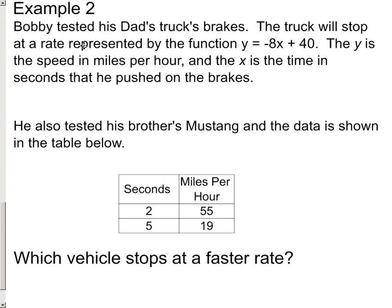So let's read this. Bobby tested his dad's truck's brakes. The truck will stop at a rate represented by the function y equals negative 8x plus 40. And that seems like an odd equation. So then the problem goes on, and it talks a little bit more. The y is the speed of miles per hour. So this is how fast that truck would be going. And the x is the time in seconds that he steps on the brakes. So if he does not step on the brakes, that would be zero seconds of stepping on the brakes. So zero times negative 8 is zero, and zero plus 40 is 40. So he'd be going 40 miles per hour. That's what this equation is showing us.